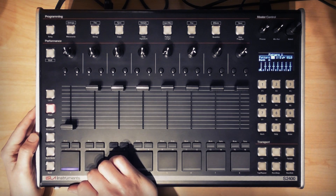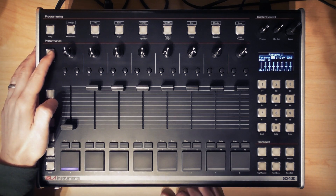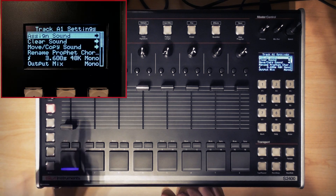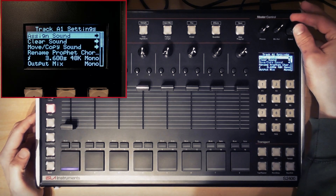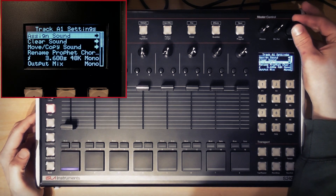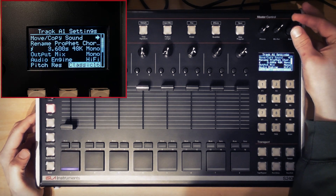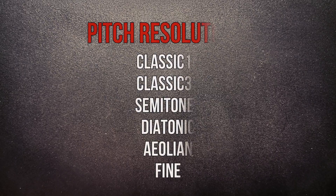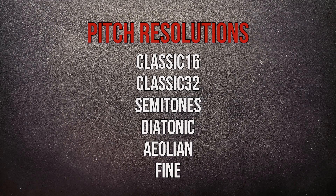You can change the pitch resolution of the fader by pressing Shift and the pad to bring up the track settings menu. Scroll down to Pitch Resolution and your options are Classic 16, Classic 32, Semitones, Diatonic, Aeolian and Fine.